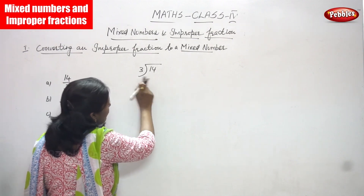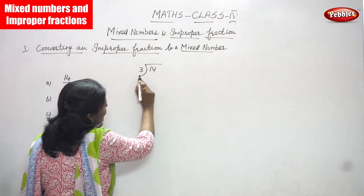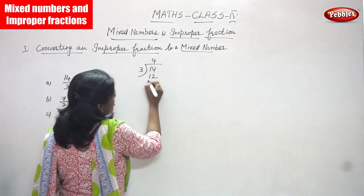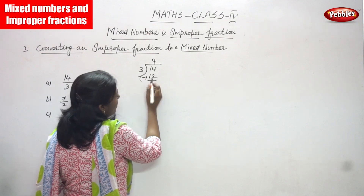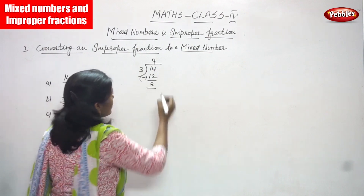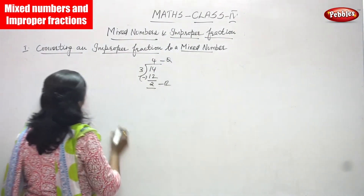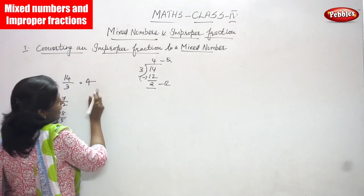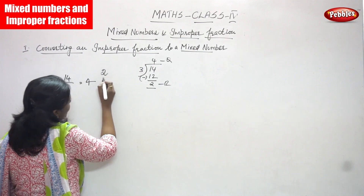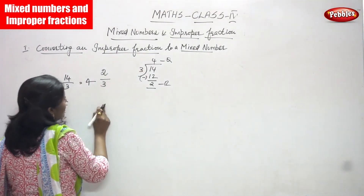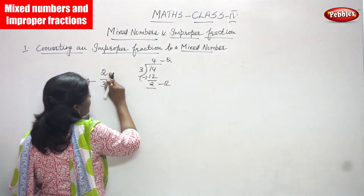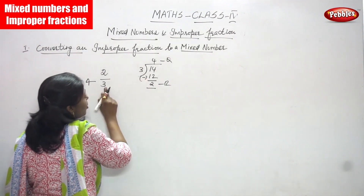Now we are going to divide 14 by 3. You have to use the 3 times table. 4 threes are 12. So you subtract: 14 minus 12, you get 2. So the quotient is 4 and the remainder is 2. The remainder goes to the top as the numerator, and 3, the divisor, becomes the denominator. So you write the answer like this: the whole number, with the remainder as the numerator and the divisor as the denominator.